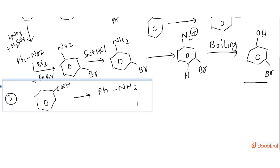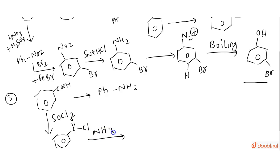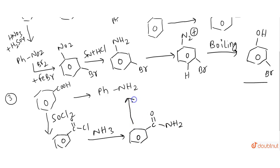The next conversion is from benzoic acid to aniline. Starting from benzoic acid, we introduce a Cl group into the benzene ring to give an acyl chloride (COCl). In the presence of ammonia, it converts into an amide (CONH2) via a simple SN2 reaction. The conversion of amide to amine is via Hoffmann bromamide reaction.